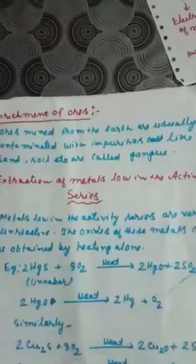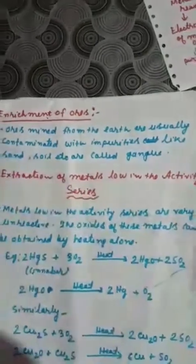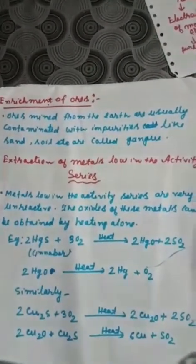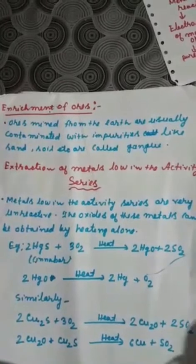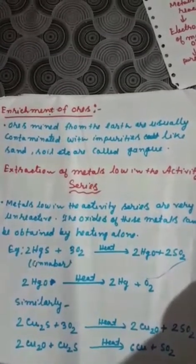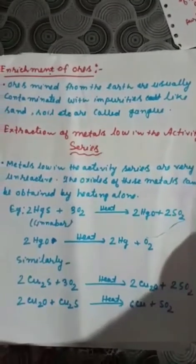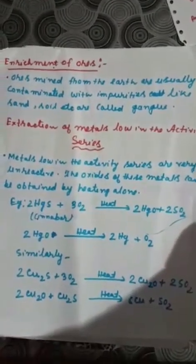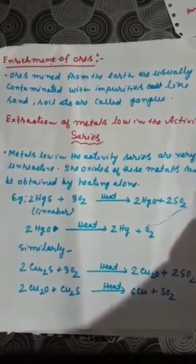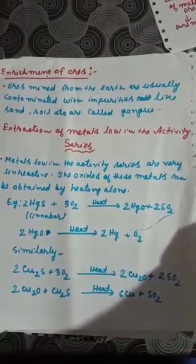Next is enrichment of ores. Ores mined from the earth are usually contaminated with impurities like sand and soil — these are called gangue particles. We have to remove these gangue particles before extraction. This process is called enrichment of ores.